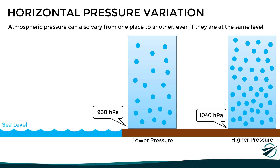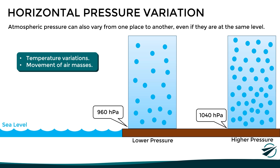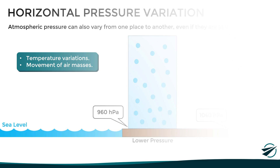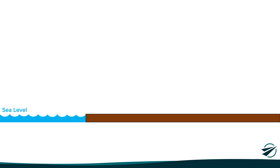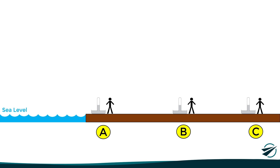These density differences are mainly due to temperature variations and the movement of large air masses caused by global atmospheric circulation. Let's look at what happens when there are horizontal pressure differences. Let's say there are three places at the same level, each with a barometer. At point A, the pressure is 960 hectopascals; at point B, 1005; and at point C, 1040.